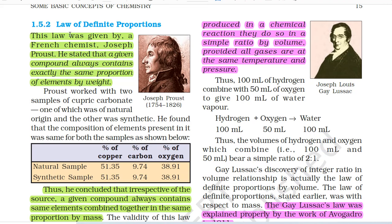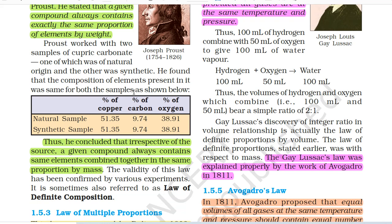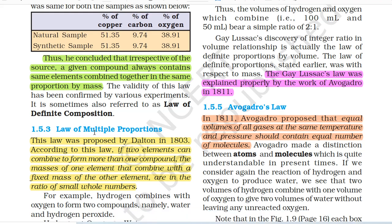1.5.2 Law of Definite Proportions. This law was given by a French chemist, Joseph Proust. He stated that a given compound always contains exactly the same proportion of elements by weight. Proust worked with two samples of cupric carbonate — one of natural origin and the other synthetic — and found that the composition of elements present was the same for both samples. Thus he concluded that irrespective of the source, a given compound always contains the same elements combined in the same proportion by mass. It is sometimes also referred to as the law of definite composition.